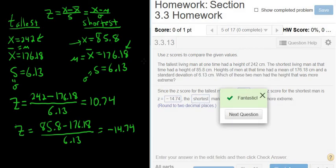So I hope that made sense. This was a nice application of z-scores. So given two heights, we can compare them, and we can determine which one is more extreme by using z-scores. Again, the shortest man was more extreme because negative 14.74 is farther from 0 than 10.74. This is farther from 0 than 10.74. That's it. I hope that helped.